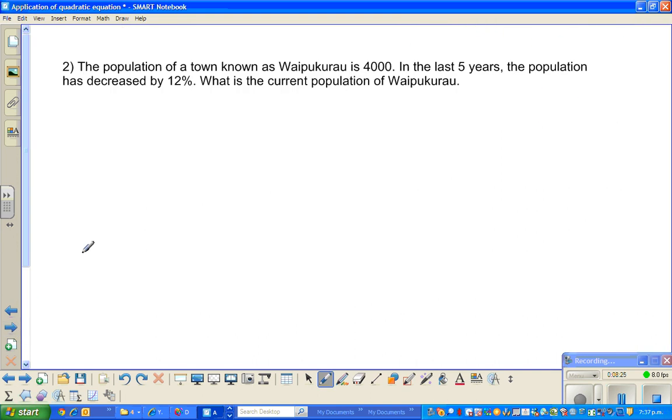Let me do one more example very fast. The population of a town known as Waipukurau is 4000. In the last five years, the population has decreased or reduced by 12%. What is the current population of Waipukurau? The same logic. We will use the shortcut method now.